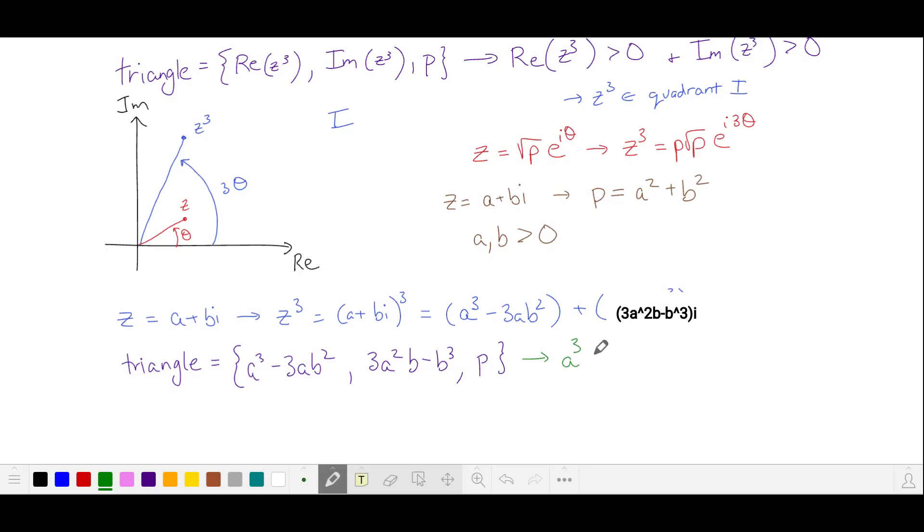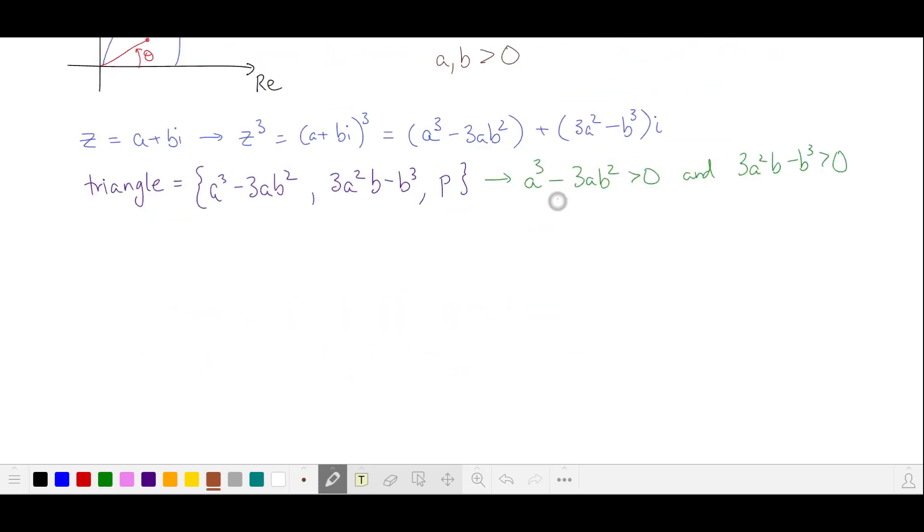So we have that these other quantities are also positive. From the first inequality, we get that a squared is greater than 3b squared, and from the second, factoring out b, we get that a squared is greater than 1 third b squared, and since both of these need to be true, we only need to consider this inequality.